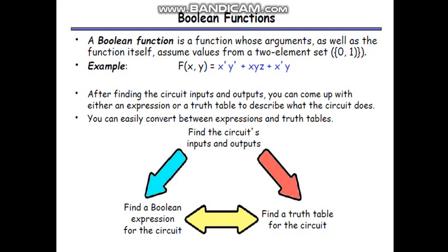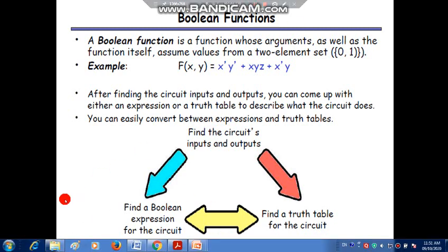After discussing Boolean algebra and Boolean theorems, we discuss the Boolean function. A Boolean function is a function whose arguments as well as the function itself assume values from a two-element set: zero and one. For example, f(x,y) = x bar·y bar + x·y·z + x bar·y. From a circuit's inputs and outputs you can derive either an expression or a truth table.